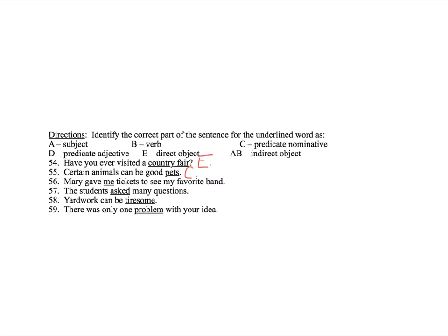Mary gave me tickets to see my favorite band. Alright, Mary is our subject. Gave is a verb. It's an action verb. Mary gave what? Mary gave tickets. Tickets would be our direct object. But we want to know what me is. So, she gave them to me. That makes me the indirect object. Indirect objects answer to whom or for whom an action of the verb is done. So, gave the tickets to me. Notice the order of that. Mary, subject. Gave, verb. Me, indirect object. Tickets, direct object. That is how it will be in English. When you have an indirect object, it will always come between the verb and the direct object.